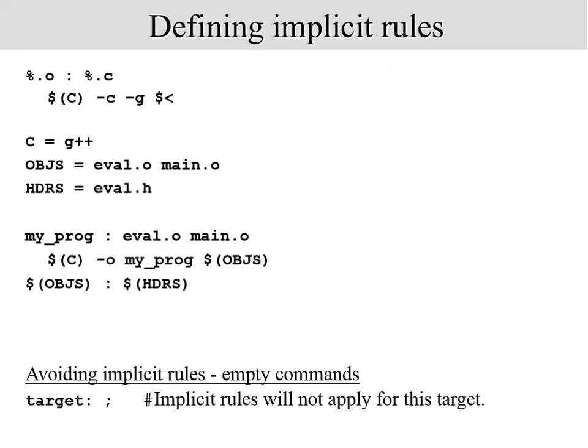Another way to express rules is using the pattern rule: '%.o: %.c'. This is a very succinct way of representing a rule — it replaces all instances with the appropriate filenames and works its way through the make. Note that if you specify an empty command for a target, make will not apply the implicit rule for it. This is one way to override implicit commands — specify an empty command to prevent implicit rules from being applied.